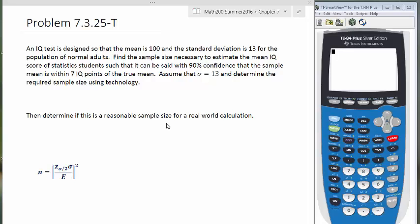This is a problem from section 7-3, similar to your homework. An IQ test is designed so that the mean is 100 and standard deviation is 13 for a population of normal adults. Find the sample size necessary to estimate the mean IQ score of statistics students such that it can be said with 90% confidence that the sample mean is within 7 IQ points of the true mean. Assume that sigma is equal to 13 and determine the required sample size.